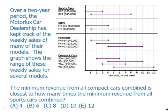Pause the video, and then we'll talk about this. So this graph shows, over a two-year period, the weekly sales of many models of cars, broken up by type: sports cars, SUVs, minivans, and compact cars. For each one, we're getting a range — what's the most cars sold in a week and what's the fewest. The question is: the minimum revenue from all compact cars combined is closest to how many times the minimum revenue from all sports cars combined?